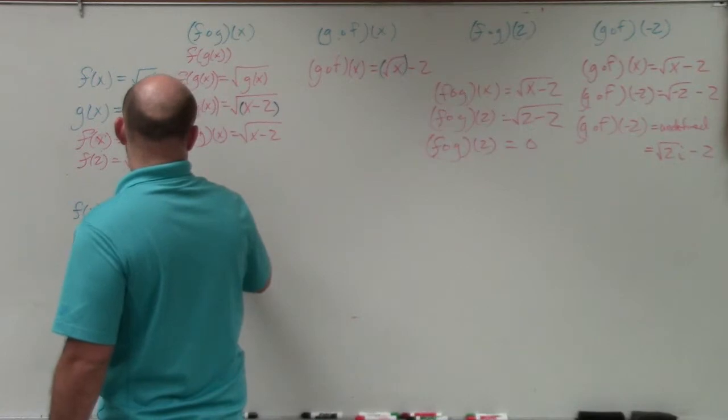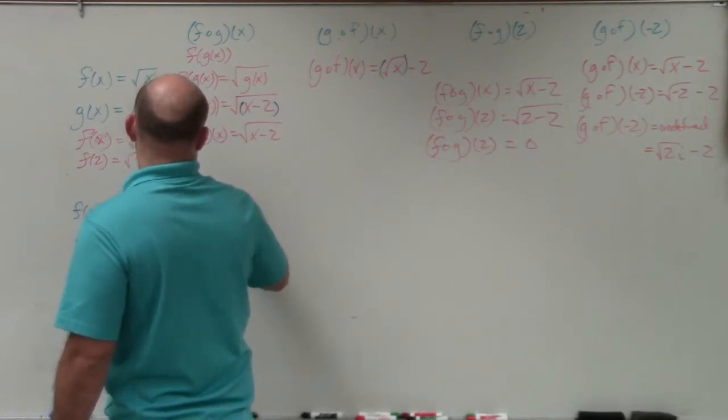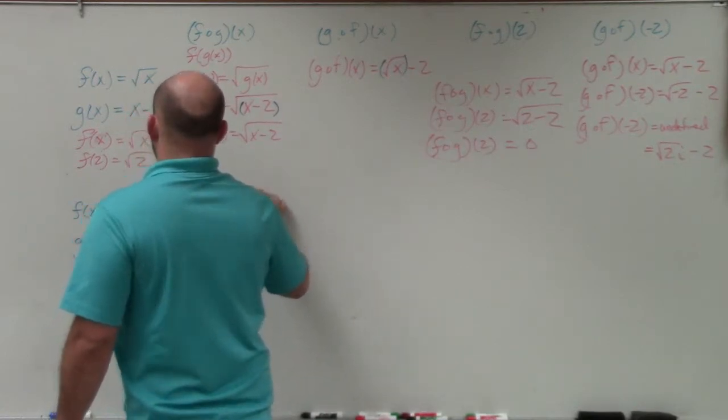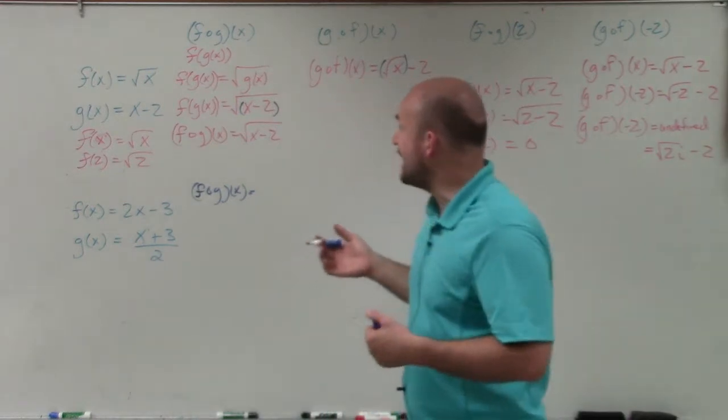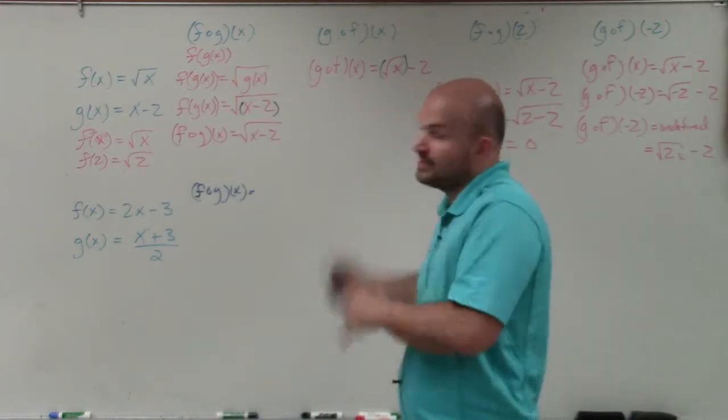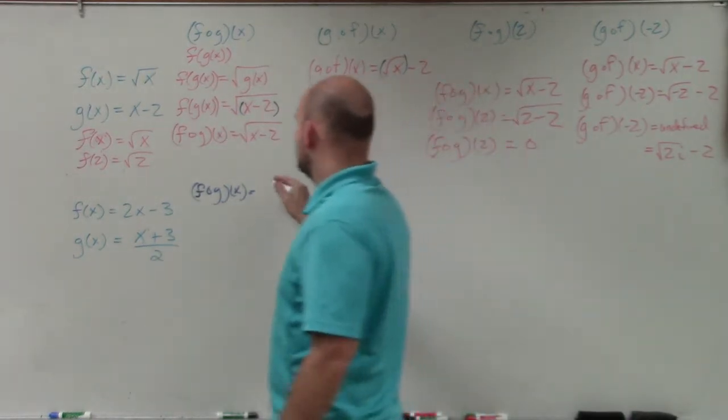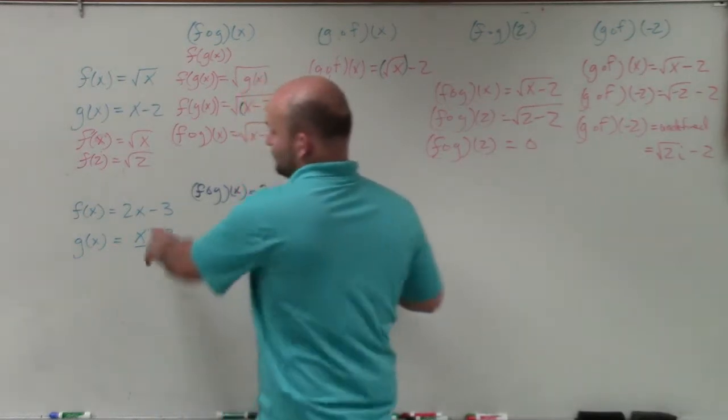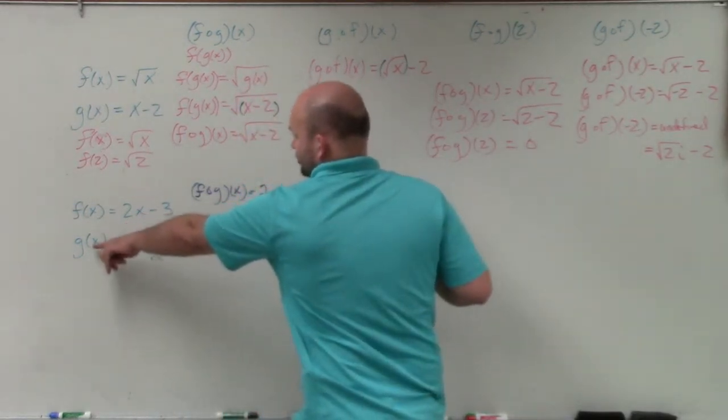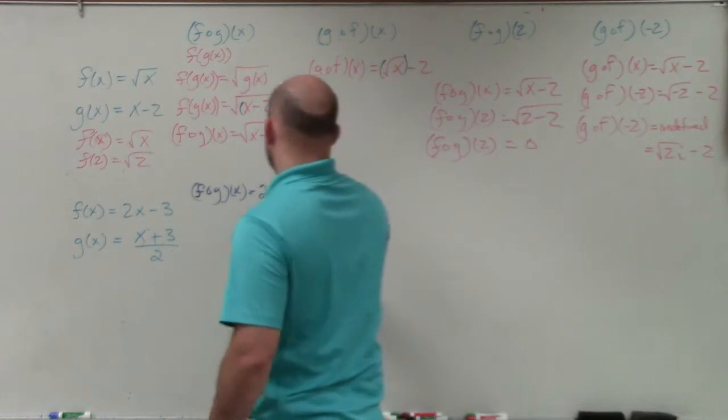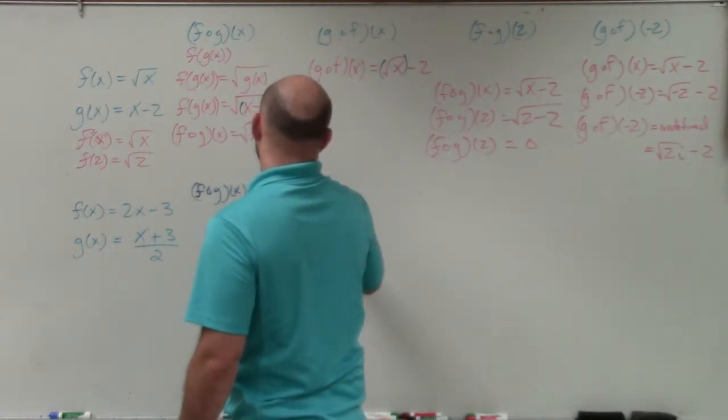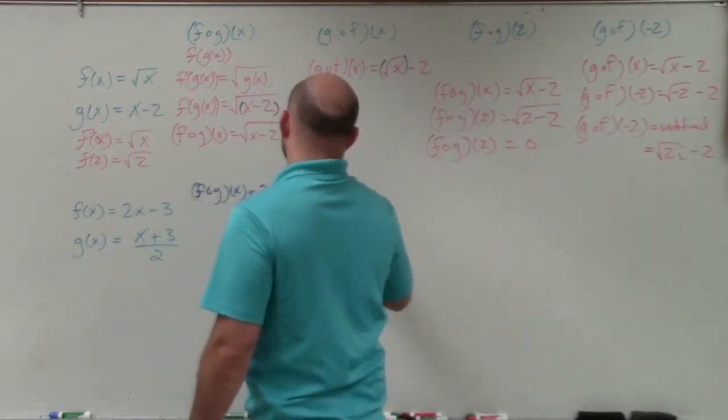So in this first example, f of g of x, now wherever there's an x in my f of x function, I'm going to plug the g of x function in there. So you can see here I have 2 times x. Well, instead of times x, I'm going to plug in the g of x. Well, g of x is equal to x plus 3 divided by 2, and then minus 3.